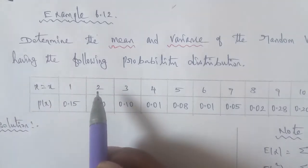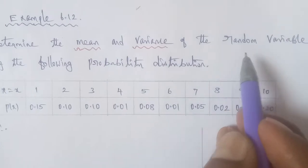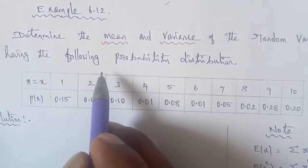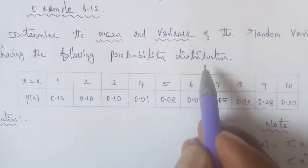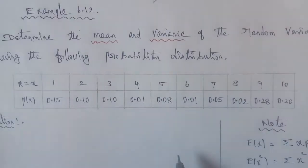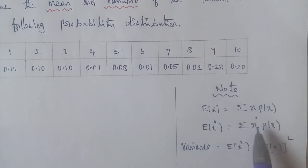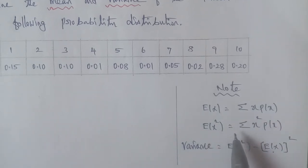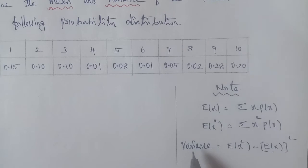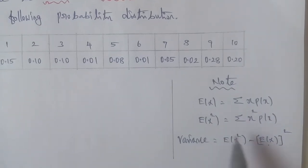Hi students. Example 6.12: determine the mean and variance of the random variable x having the following probability distribution. We will have a table with mean and variance contributions. The mean formula is: E(x) = Σ x·p(x), and E(x²) = Σ x²·p(x). The variance formula is: E(x²) − [E(x)]².